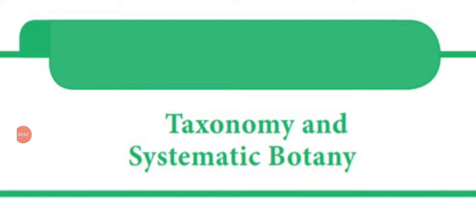Good morning students, this is 11th standard botany video class, video 4. In this video we are going to continue the topic taxonomy and systematic botany, lesson families. In the last video class we saw the Apocynaceae family and the botanical description of Vinca rosea. Now we are going to see another dicot family, Euphorbiaceae, in this video.